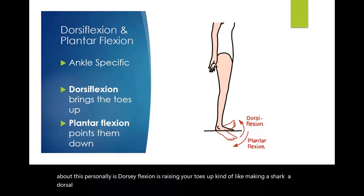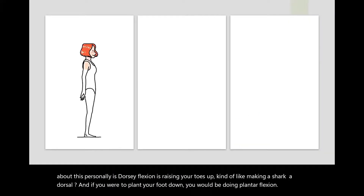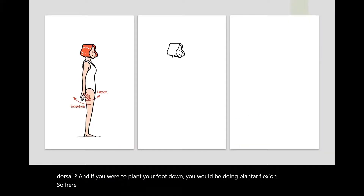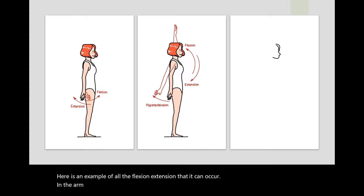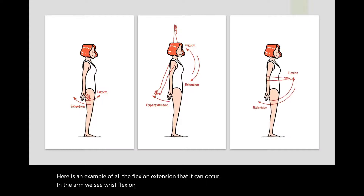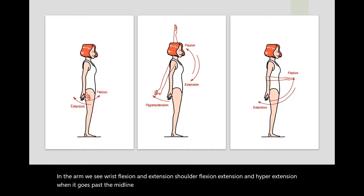And if you were to plant your foot down, you would be doing plantar flexion. Here is an example of all the flexion and extension that can occur in the arm. We see wrist flexion and extension, shoulder flexion and extension, and hyperextension when it goes past the midline.